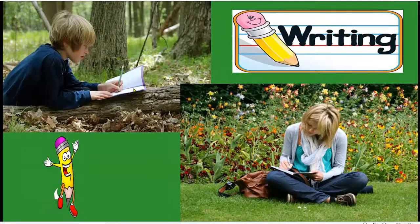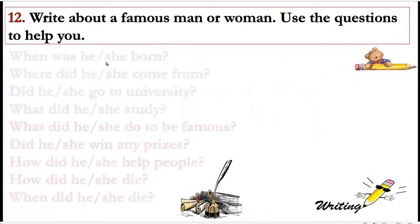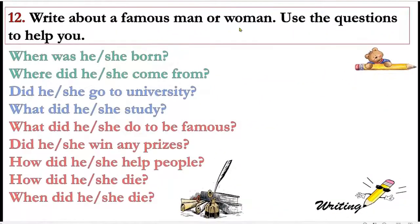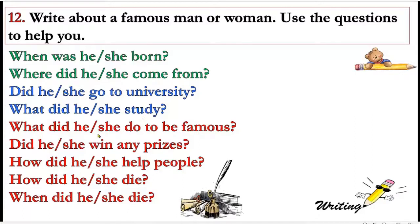Now please go to the next exercise: writing. Write about a famous man or woman. Use these questions to help you: When was he or she born? Where did he or she come from? Did he or she go to university? What did he or she study? What did he or she do to be famous? Did he or she win any prizes? How did he or she help people? How did he or she die? When did he or she die?